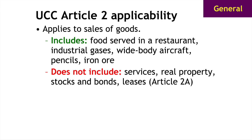Should you apply UCC Article 2 to the transaction in front of you? That's the first question to tackle. UCC Article 2 applies to sales of goods. Goods are things that are movable at the time they are identified to the contract, generally. It includes things you don't normally think of as goods — like food served in a restaurant, industrial gases, wide-body aircraft, pencils, iron ore. That's all goods. It does not include services, real property, land, or houses. It does not include stocks, bonds, and securities. It does not include leases — that's actually covered in Article 2A of the UCC.